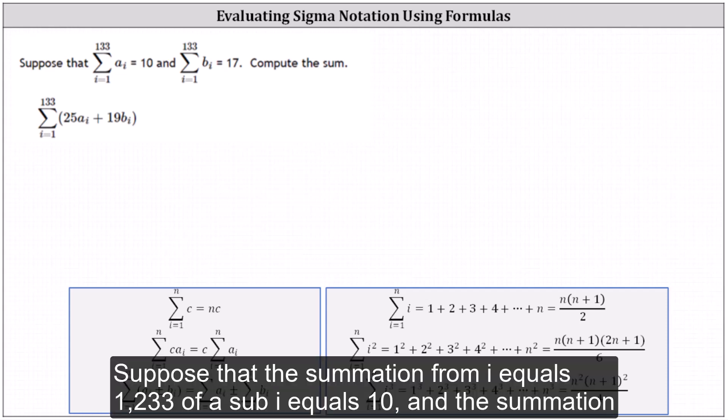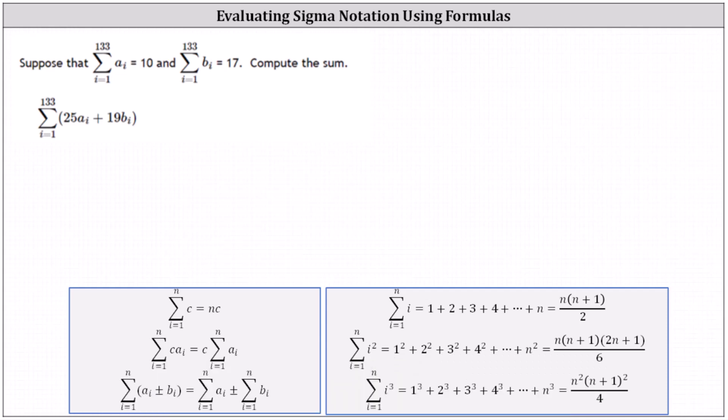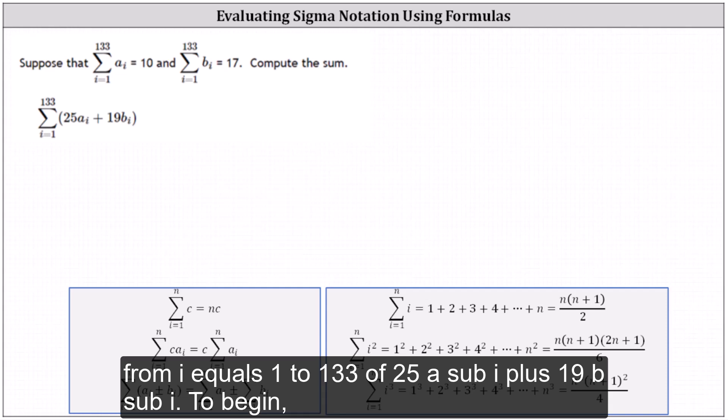Suppose that the summation from i equals 1 to 133 of a sub i equals 10 and the summation from i equals 1 to 133 of b sub i equals 17. Compute the sum. We have the summation from i equals 1 to 133 of 25 a sub i plus 19 b sub i.